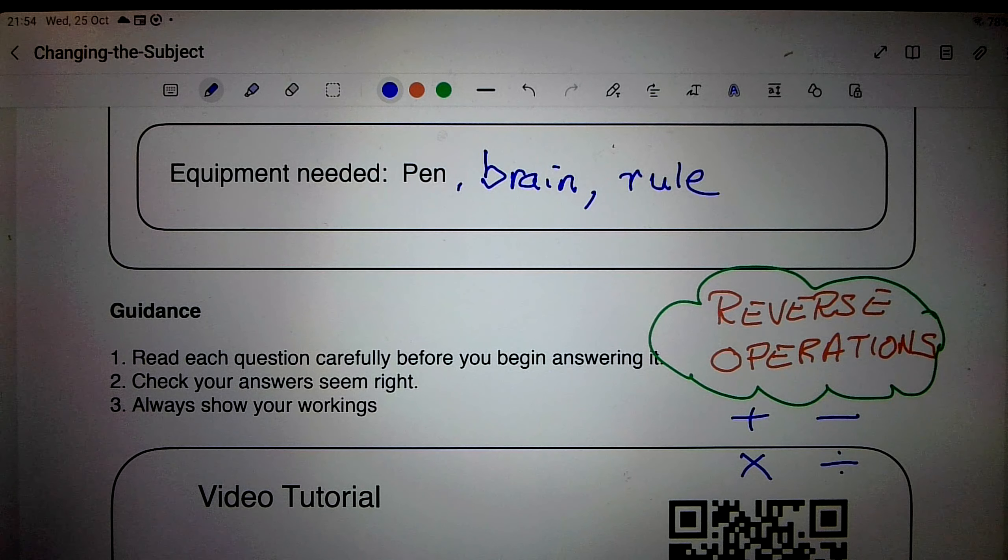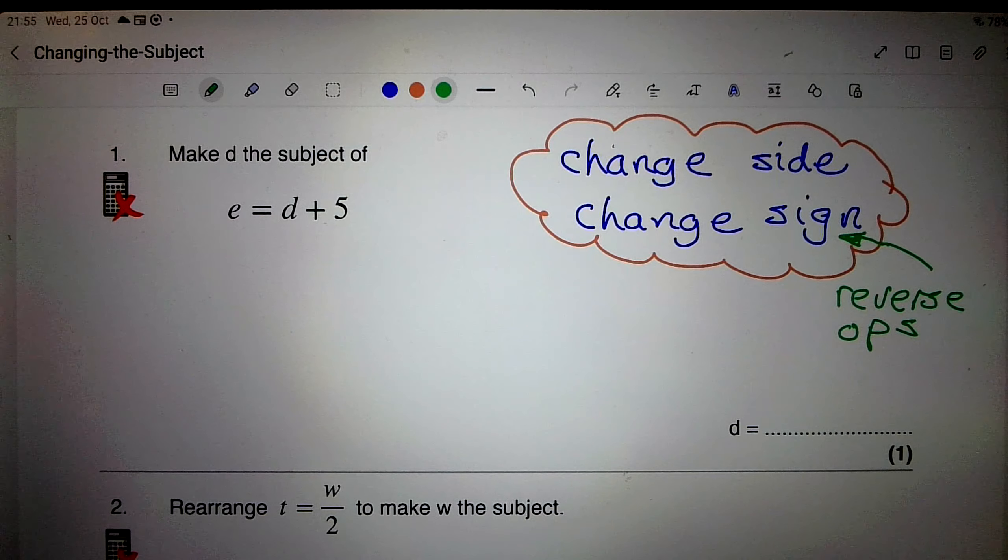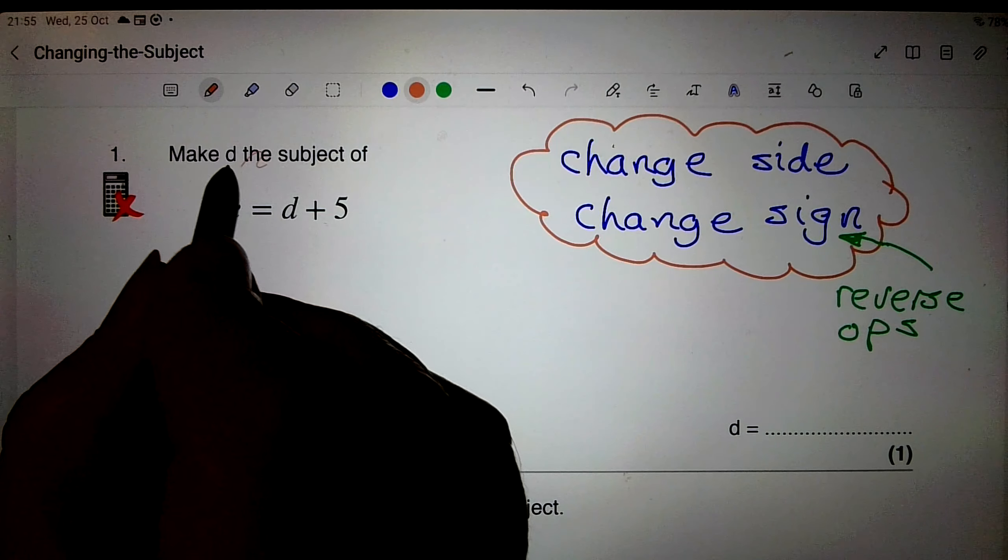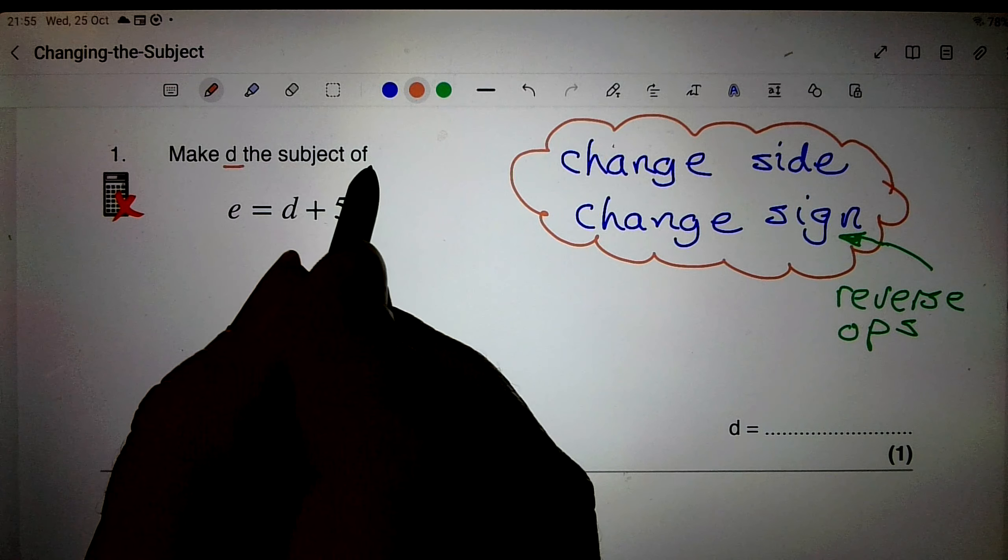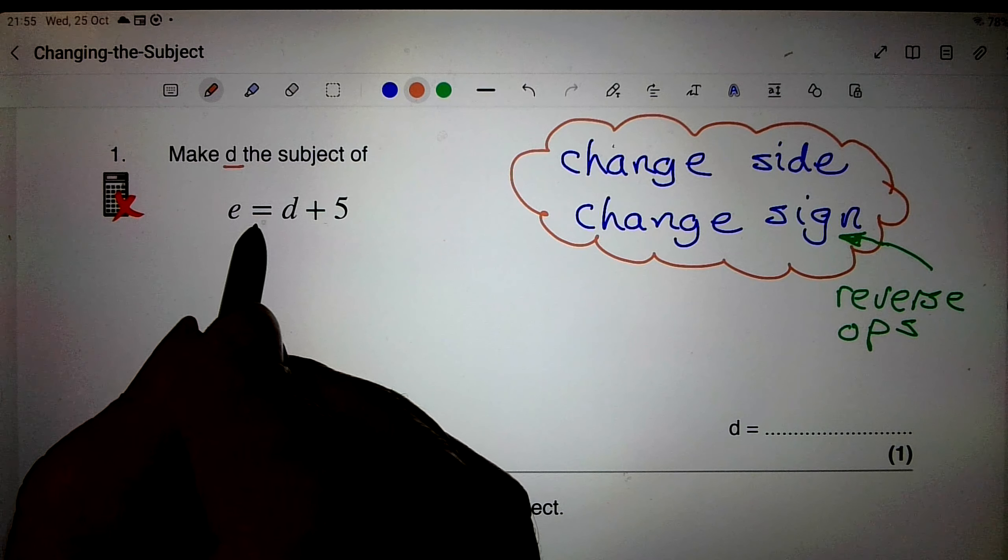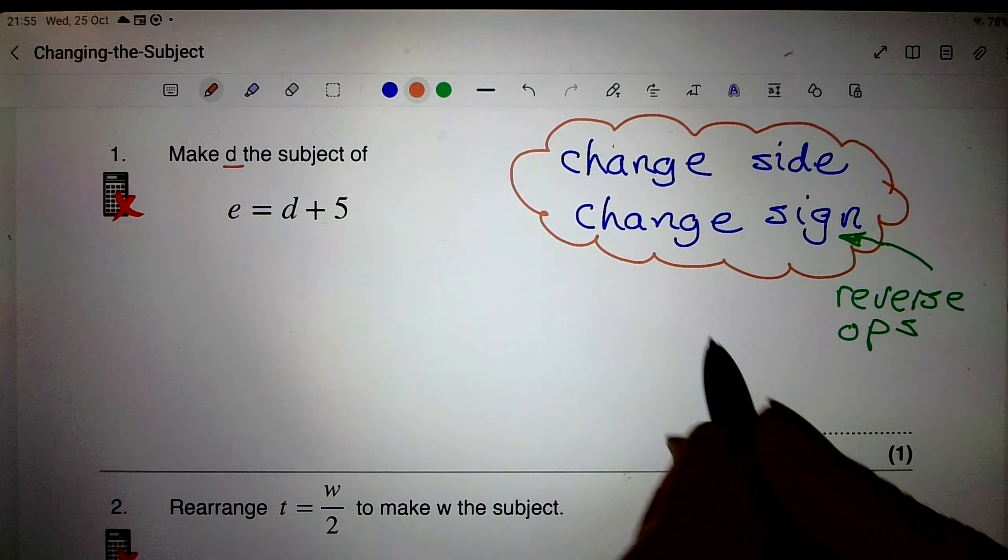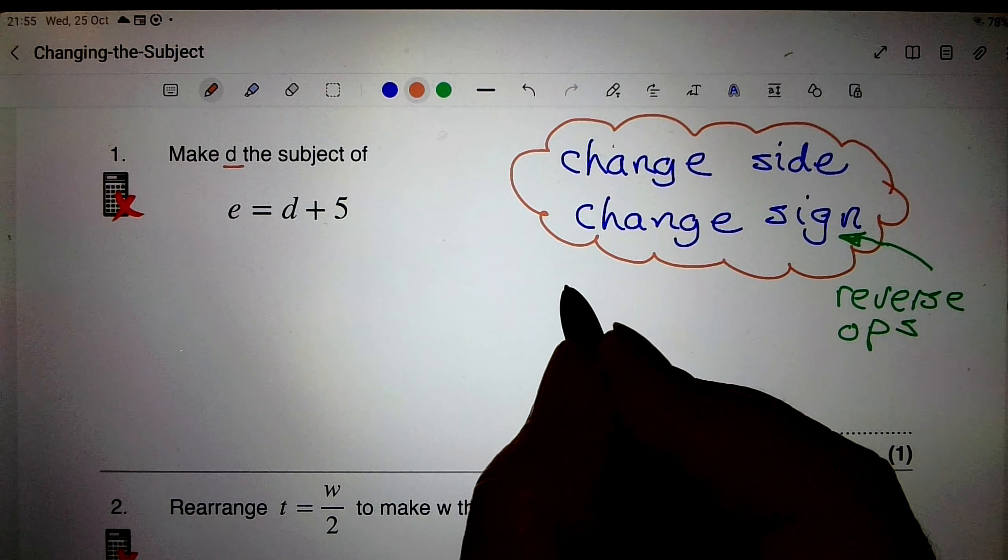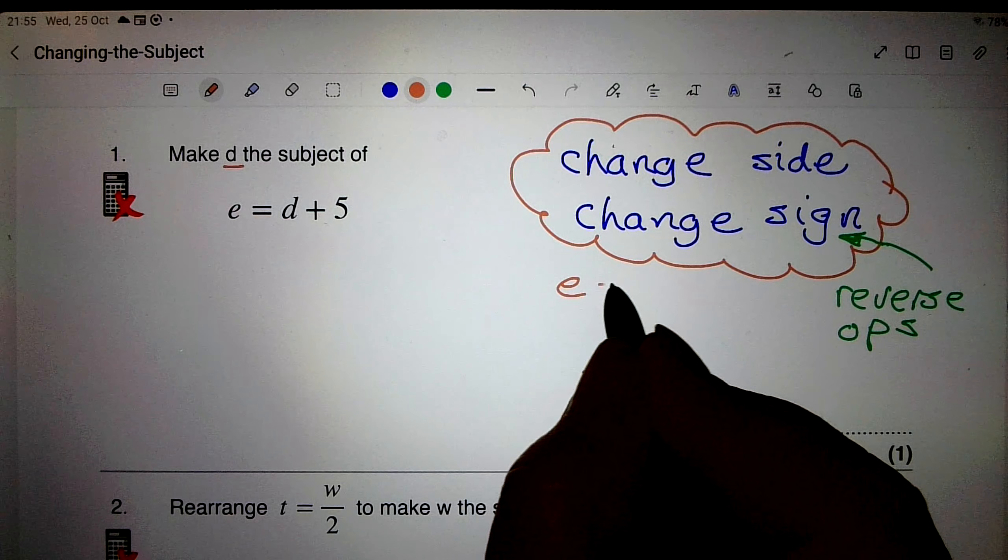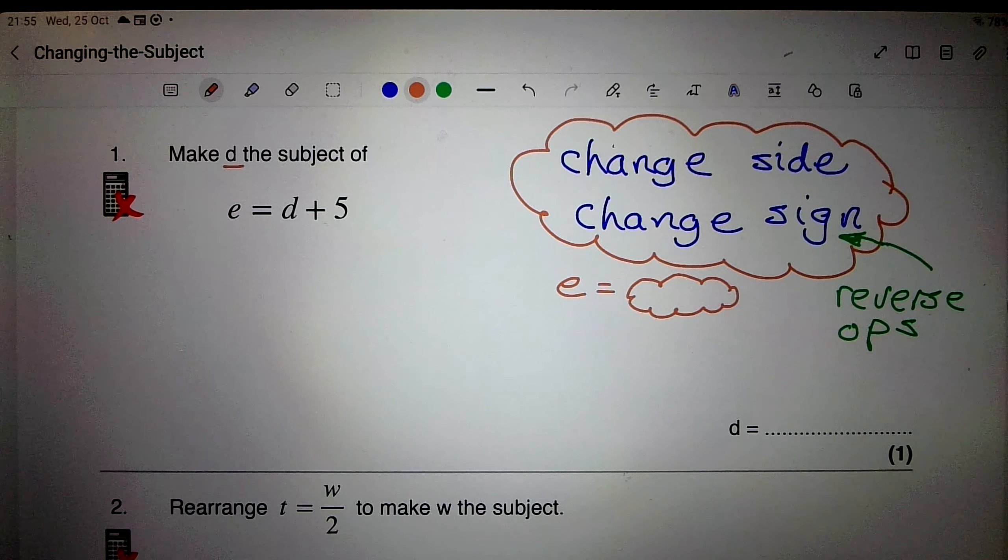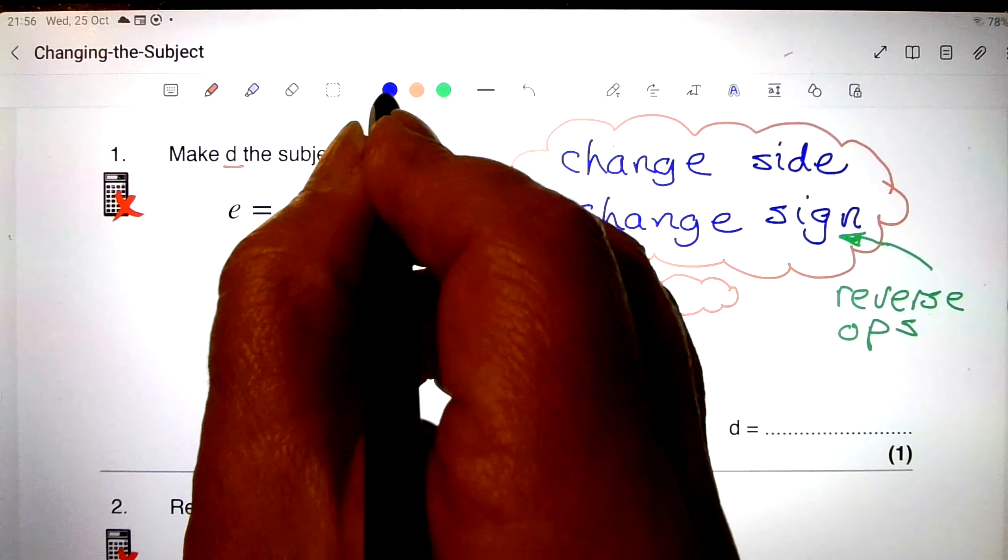Right, let's have a look at some problems then. Here's problem number one, and it says make d the subject of e equals d plus 5. So what that means is I'm looking for something that says d equals something that we have yet to determine.